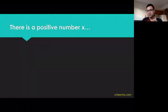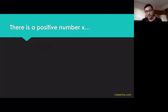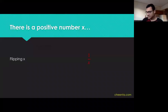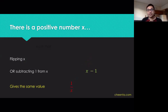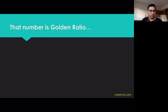So there is a positive number x. We are searching for a positive number x such that if you flip x — that is, if you compute 1 over x — or if you subtract 1 from x, that's x minus 1, you get the exact same value. This basically says you can equate 1 over x with x minus 1. And that is precisely what the golden ratio is all about: that positive number you get if you equate 1 over x with x minus 1.